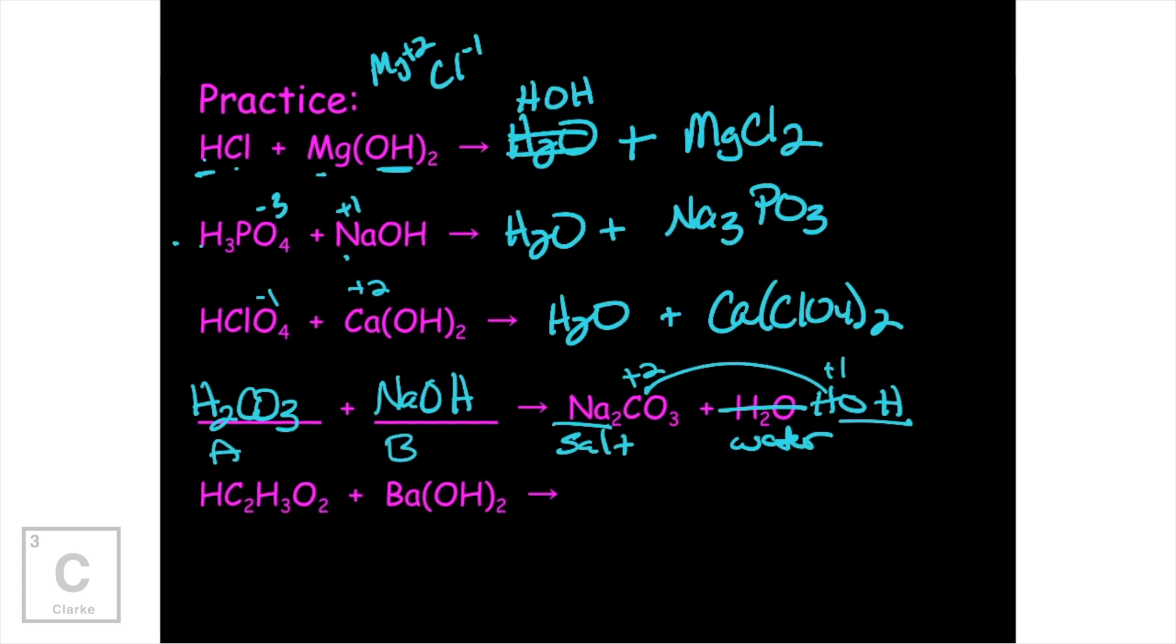Not so bad in doing that, was it? And then our last one, we've got acetic acid and we've got barium hydroxide. So again, we've got our water and barium is a plus two. Acetate is a minus one. So we're going to get Ba(C2H3O2)2.